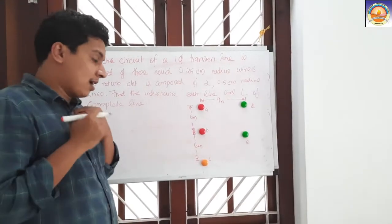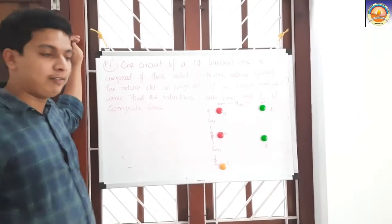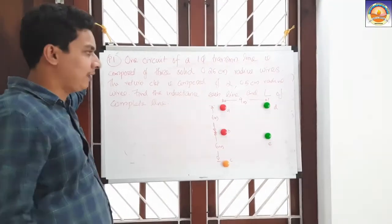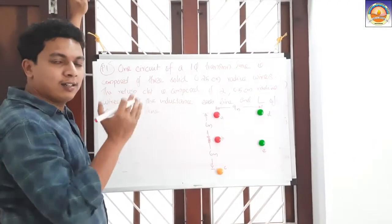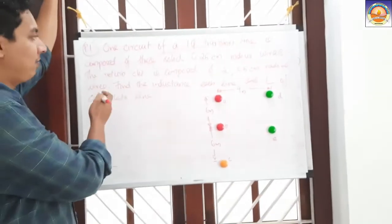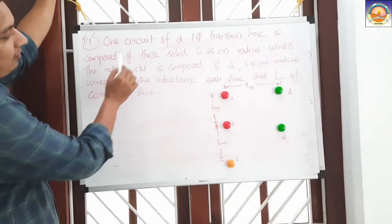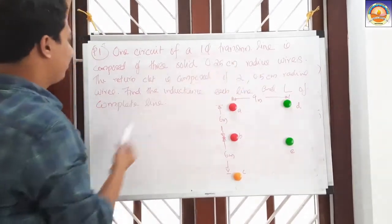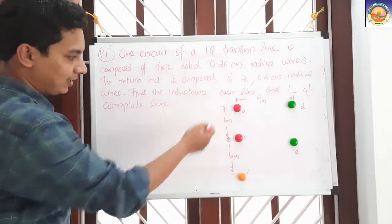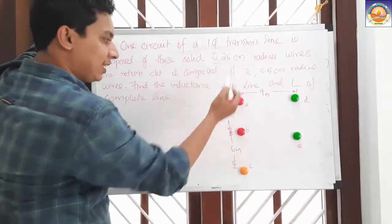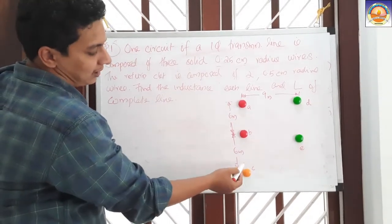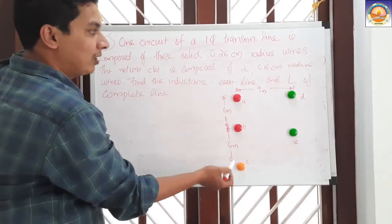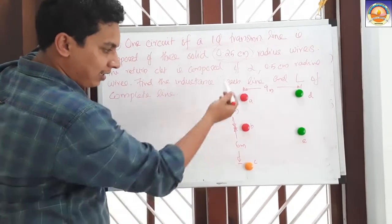As part of our tutorial, let us solve one problem. I will give you similar problems that you can solve, and you can have a discussion once you solve those problems if you have doubts. First, let me read the problem clearly. Our problem is: one circuit of a single-phase transmission line is composed of three solid 0.25 cm radius wires. These three conductors comprise one circuit, with a radius of 0.25 cm.